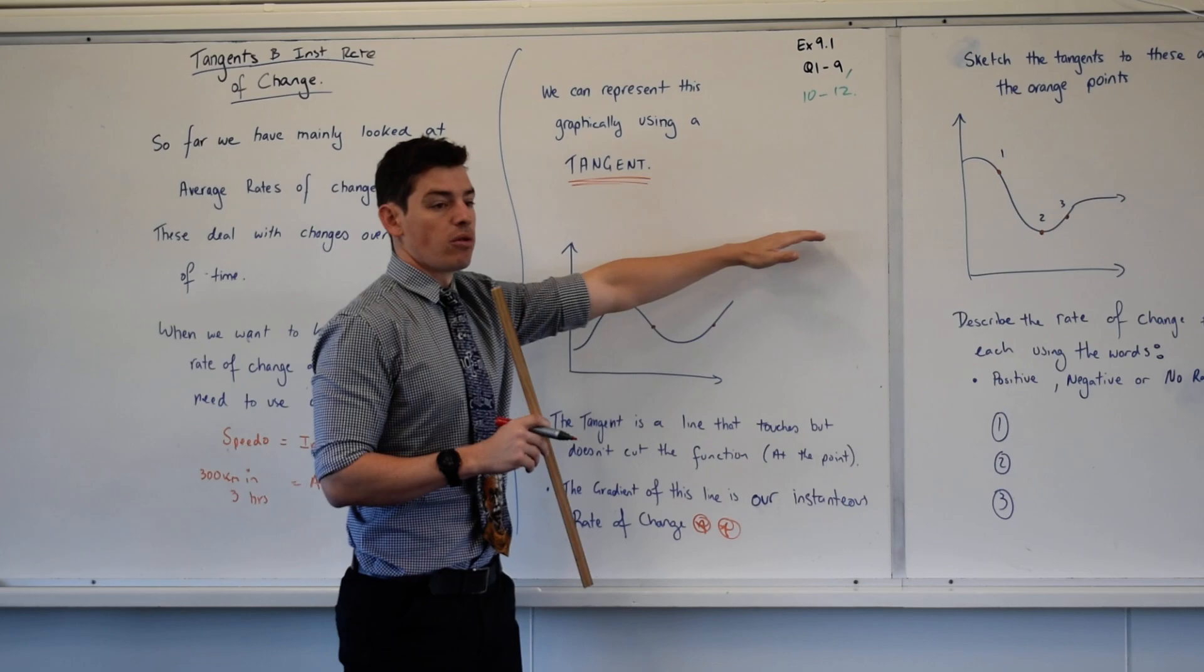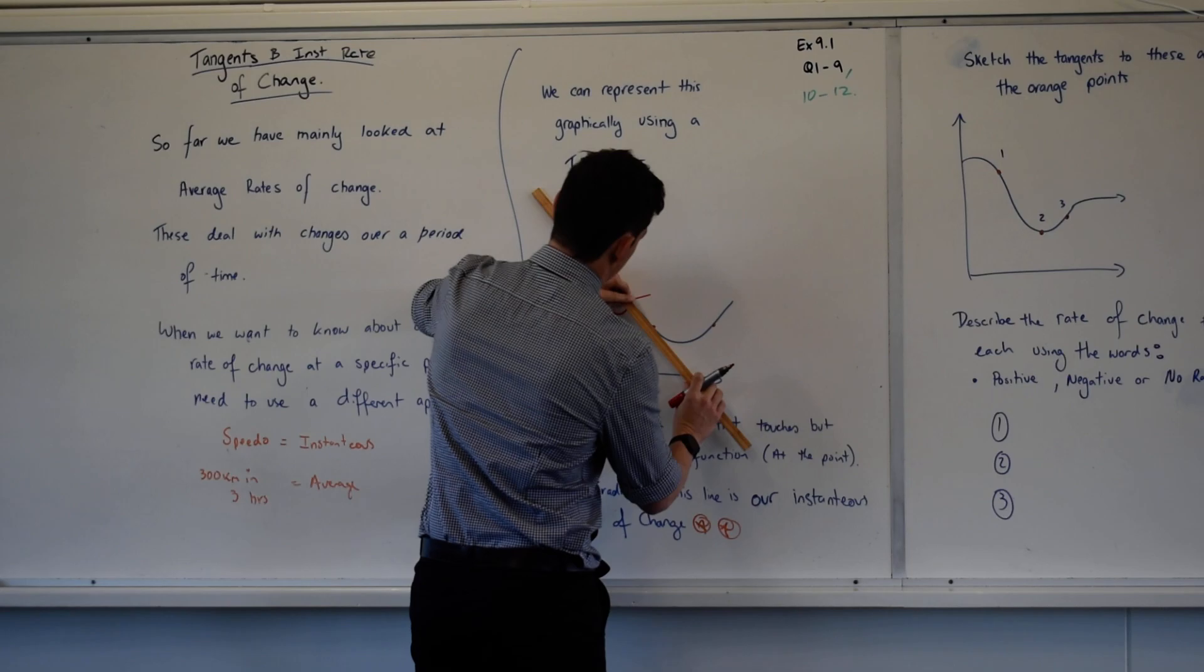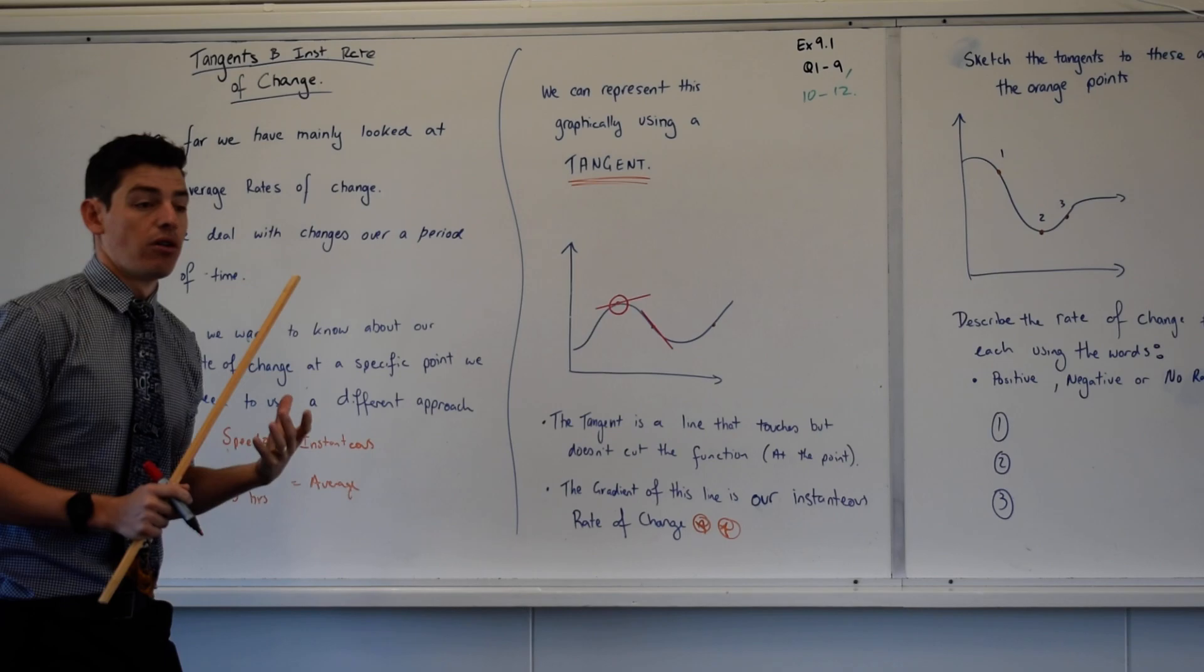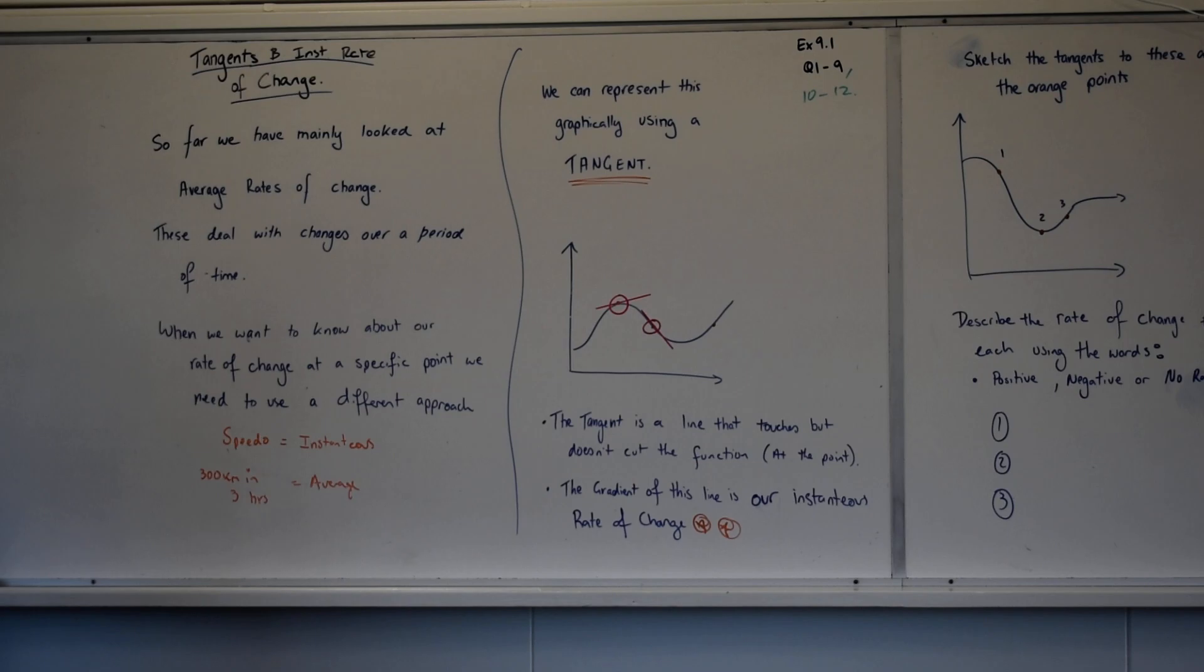Now that doesn't mean that it won't cut it later on, but I'm talking about at this specific point here, the function does not get cut by my tangent. And we'll use this as an example here, because you can very clearly see that this function does cut my tangent later on, but that's still the tangent of that line, because around this point here, it just touches but doesn't cross. Does that make sense?